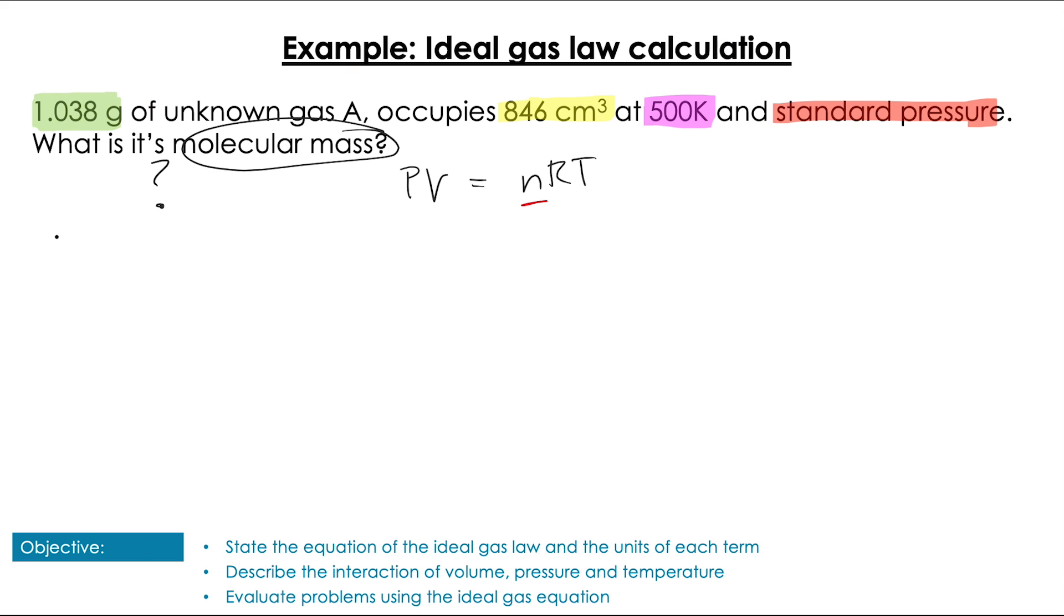So using the rest of the information in the question, we've got a volume and we've got a temperature given as well. We're going to rearrange PV equals NRT so that we get N, but first we're going to get all of our units correct. We've got volume given to us in centimetres cubed. So to get that in metres cubed, we're going to divide that by 1 million, which is going to give us 8.46 times 10 to the minus 4 metres cubed. So our volume and our temperature are fine. Our pressure is given as a standard pressure. We know is 100,000 pascals. Temperature is 500 Kelvin and R is always 8.31.